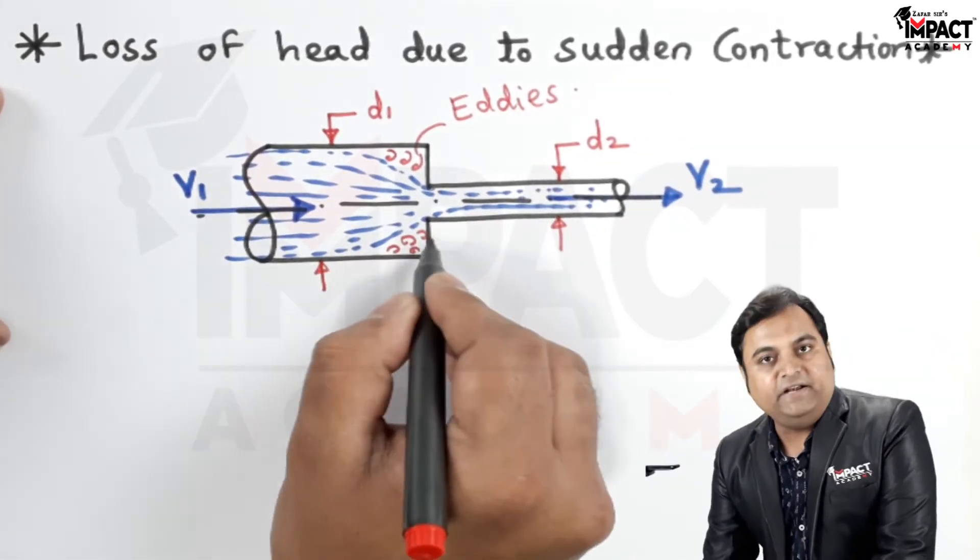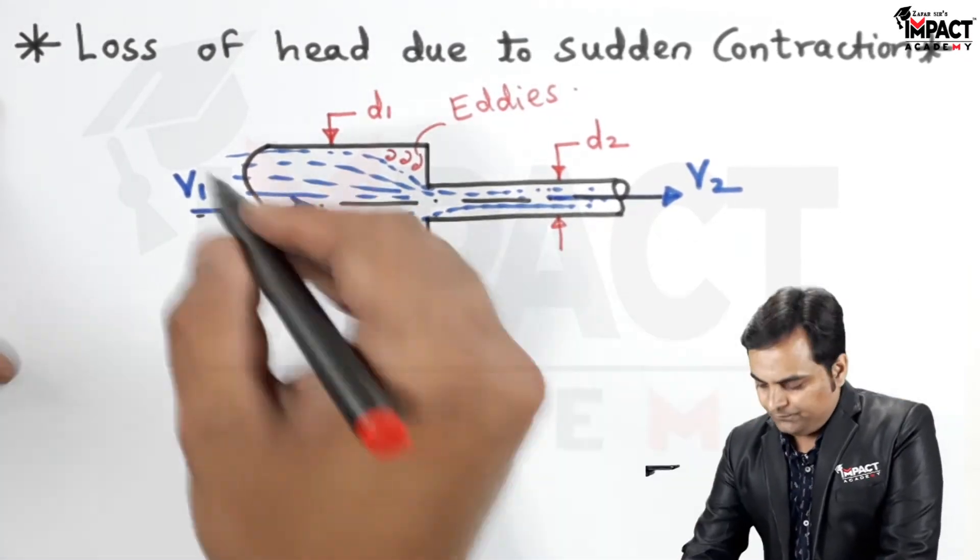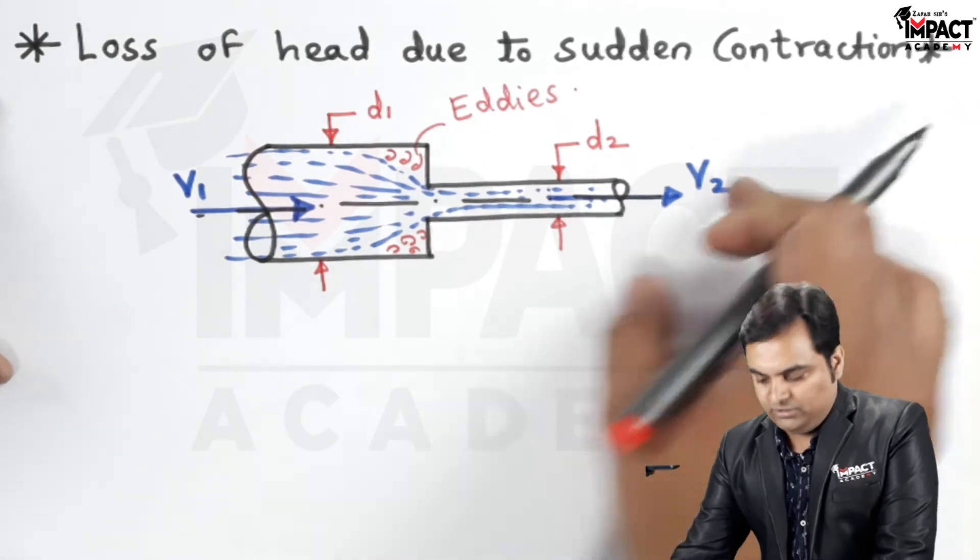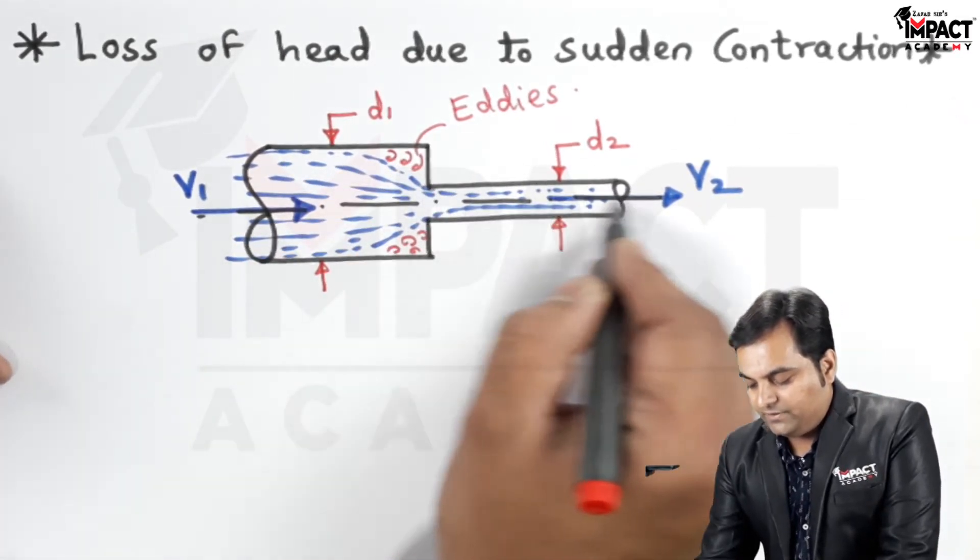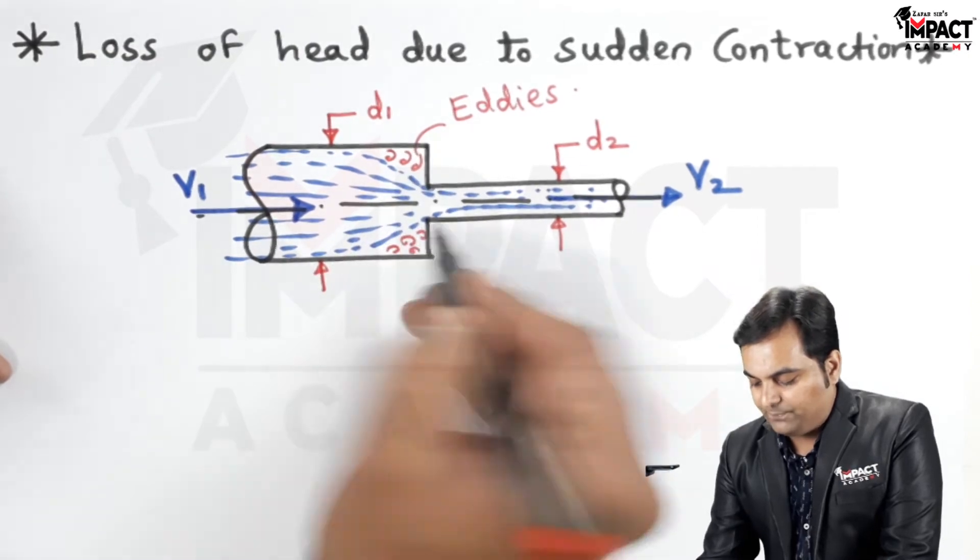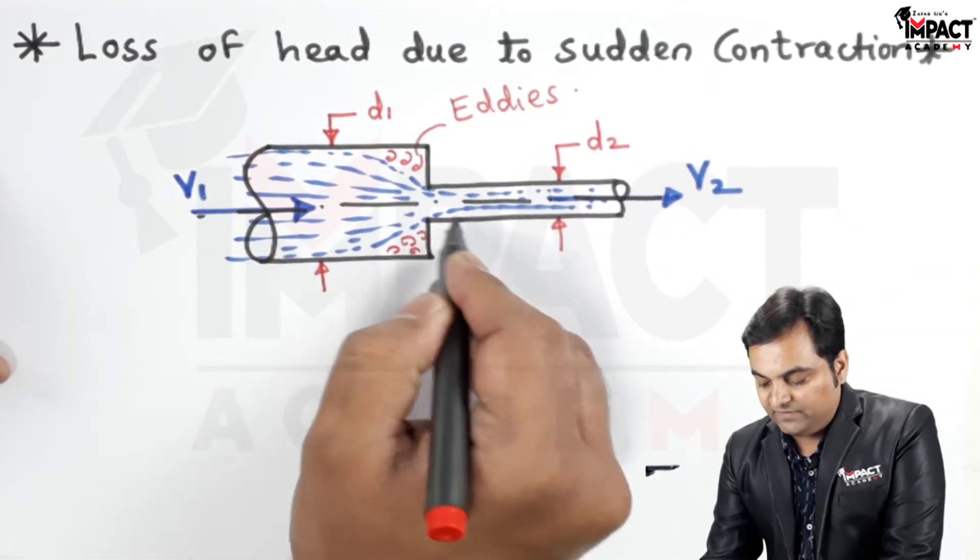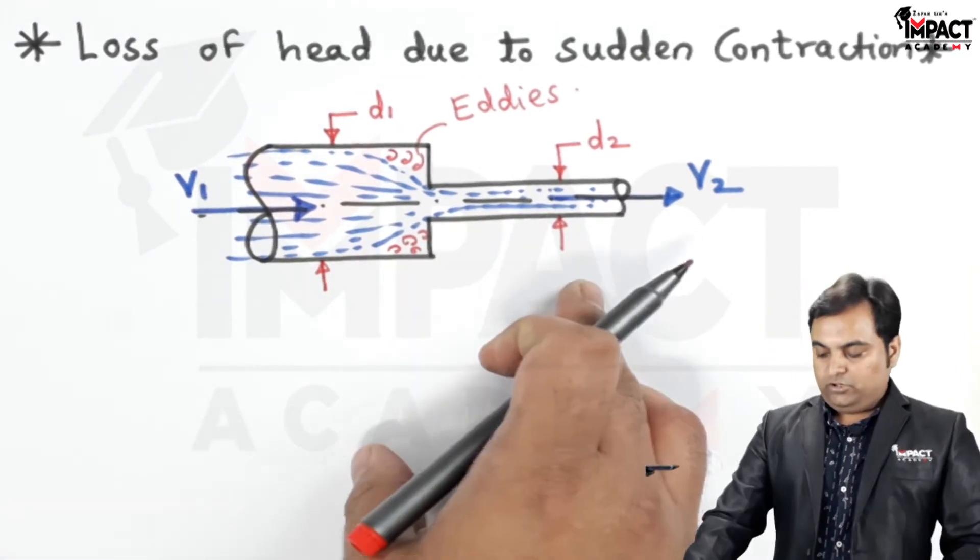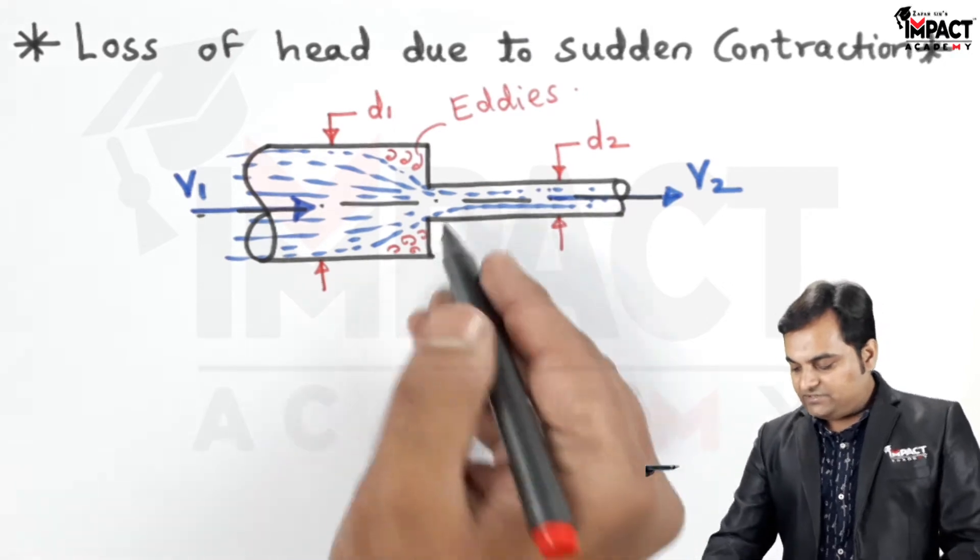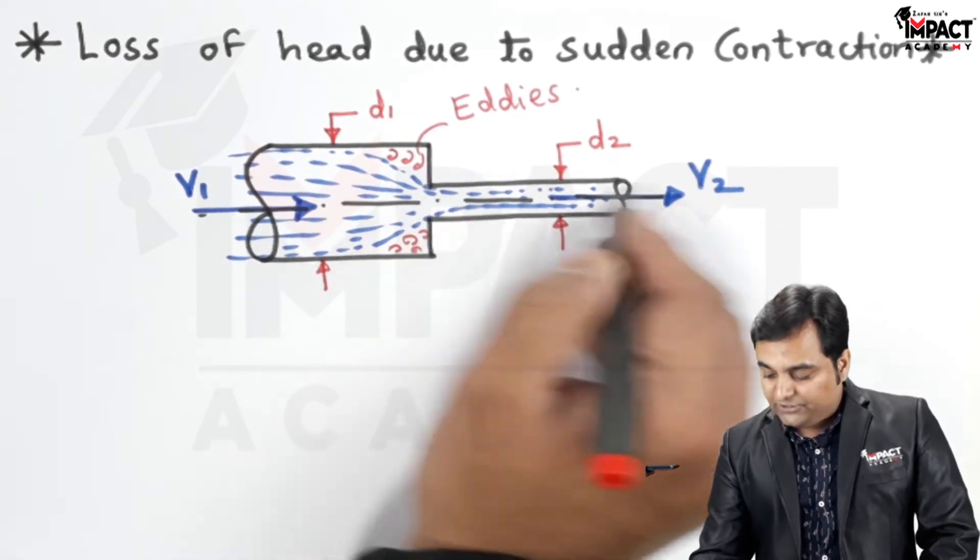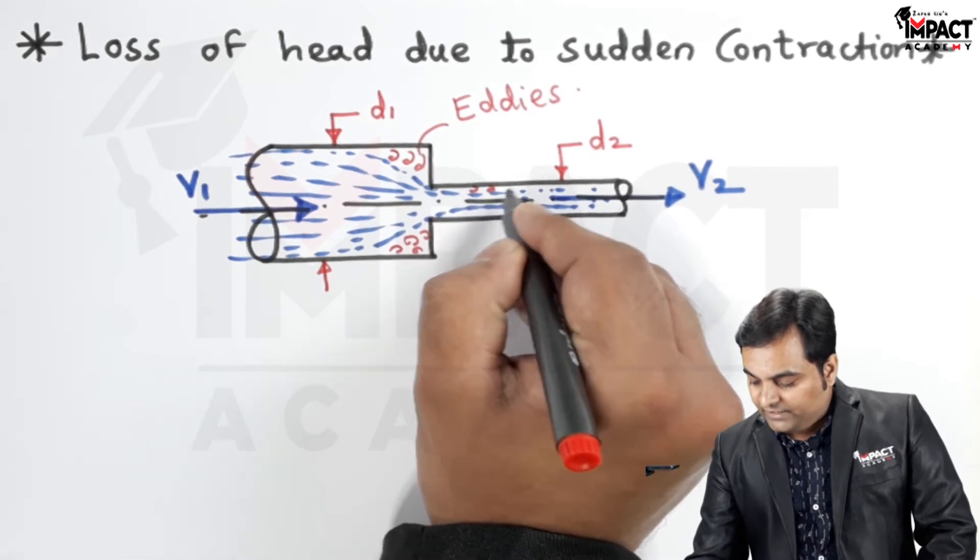When there are these eddies formed it means there will be loss due to this sudden contraction. If this contraction would have been gradual, that is instead of a sharp decrease in the diameter, at that time the losses would be minimum or can be totally cancelled. But since here the diameter has reduced suddenly and due to the eddies formation, even here the eddies are formed.